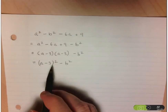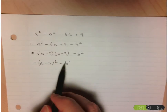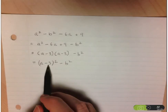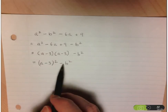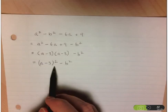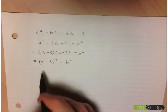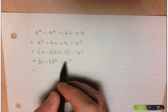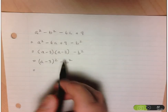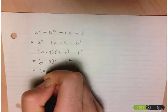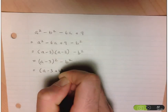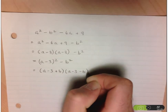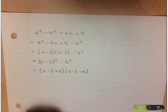At this point we should be starting to recognize these types of scenarios. We see the difference of two expressions and each of the expressions is a perfect square — so that's a difference of squares. And that factors to the first plus the second, times the first minus the second: a minus 3 plus b, times a minus 3 minus b. And there you have it — we've factored it.